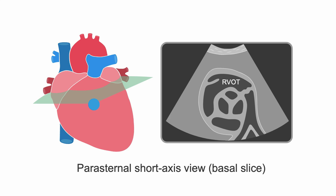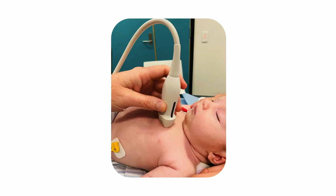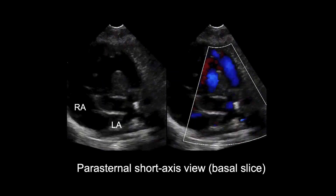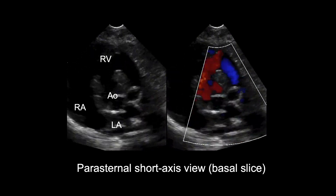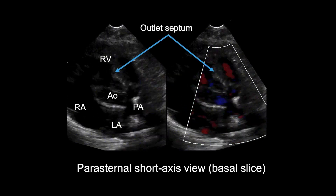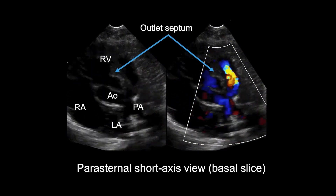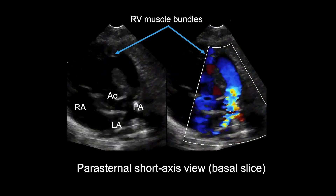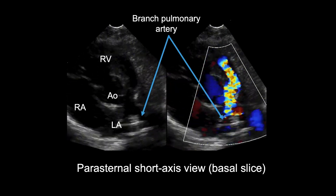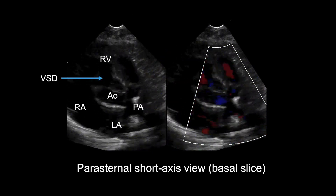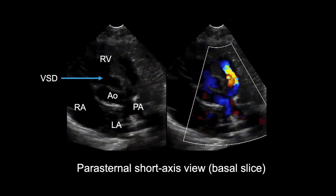One of the most helpful views to assess right ventricular outflow tract obstruction in Tetralogy of Fallot is the basal slice in a parasternal short axis plane. This view shows the left atrium, right atrium, right ventricle, aorta, and pulmonary artery. The anterior deviation of the outlet septum can be appreciated here, and we can check for the presence and extent of adjacent right ventricular muscle bundles, which are present in this example. The pulmonary valve, main pulmonary artery, and branch pulmonary artery sizes are also assessed in this plane. The large VSD is clearly profiled in this short axis plane, extending from the perimembranous to the outlet septum.